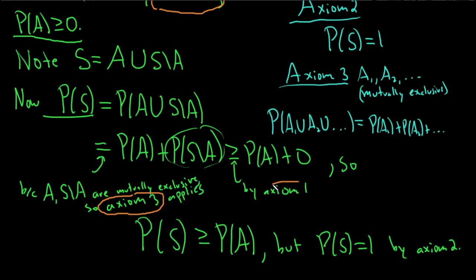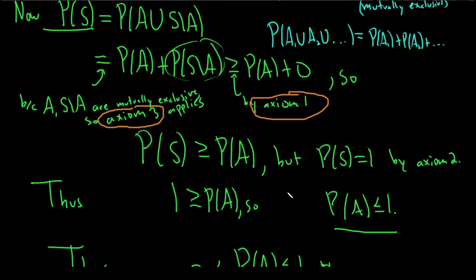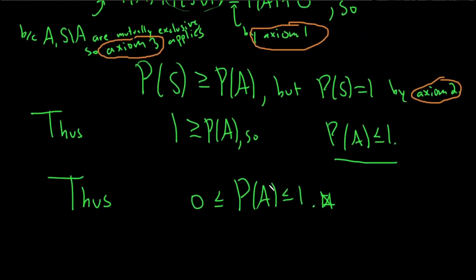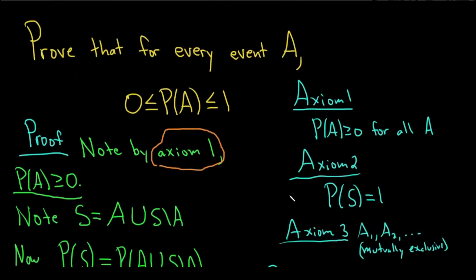And then here we used axiom 3. And then here we used axiom 1 again, right? And then here we used axiom 2, right? So we did a lot, right? We did a lot to get to this.